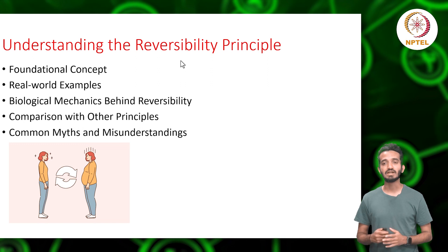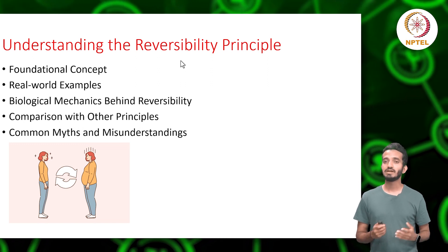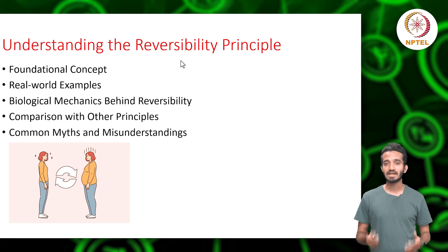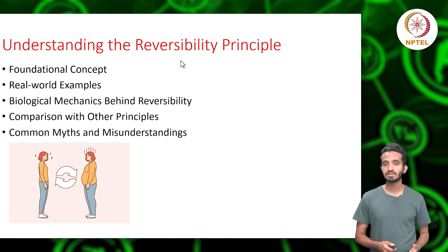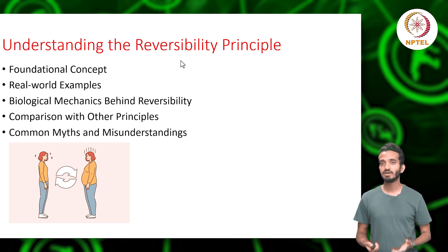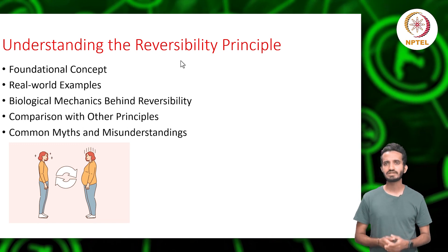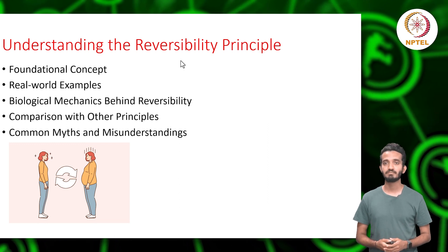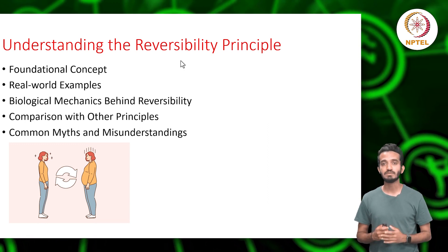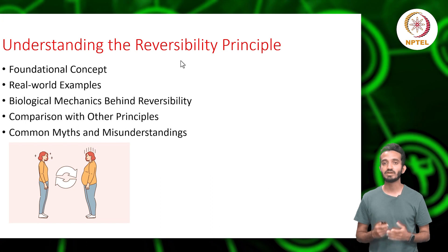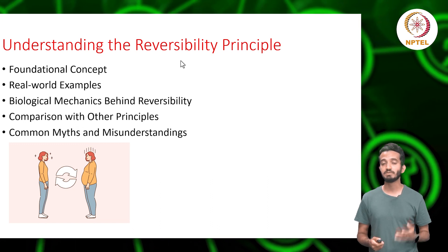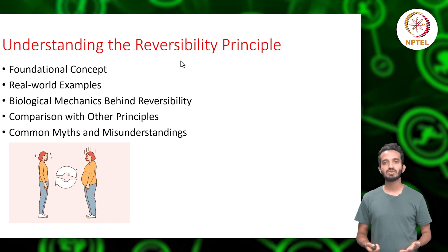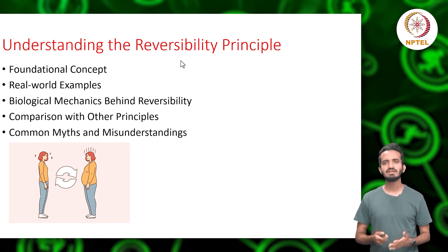This isn't the body being lazy or negligent. On the contrary, it's the body being remarkably astute and adaptable — making calculated decisions based on the inputs it receives. If the body can save energy by reducing muscle tissue or cardiovascular strength, it will, reserving energy for other vital functions. It's a survival mechanism rooted in our evolutionary past, when conserving energy could mean the difference between life and death.